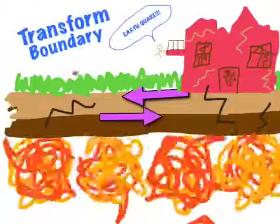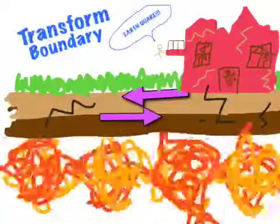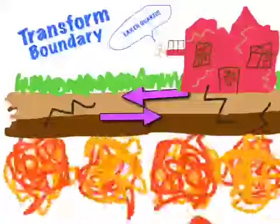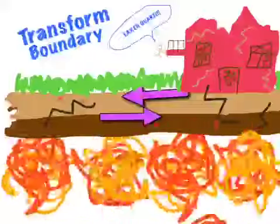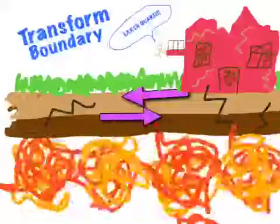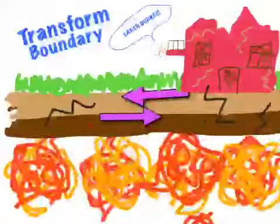Transform boundaries are when two plates slide past each other in either the same direction or in opposite directions. When the plates slide past each other, they cause earthquakes, as shown here.